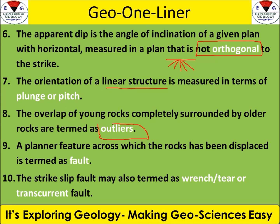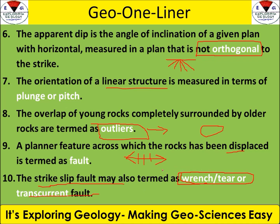Next, outlier: when young rocks are completely surrounded by older rocks, we call it an outlier. Inliers are when older rocks are surrounded by younger rocks — this is also an important concept. Regarding faults: fractures are a general term, but when observable displacement is measured, we call them faults. Strike-slip faults can also be called wrench faults or transcurrent faults — you should know these synonymous terms, as a question may use an alternate term you are unfamiliar with.